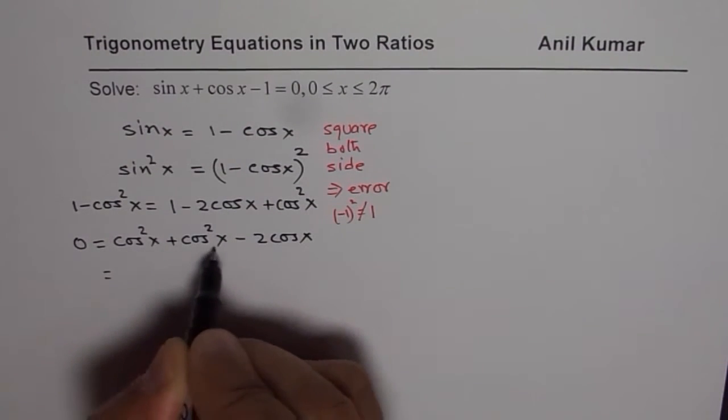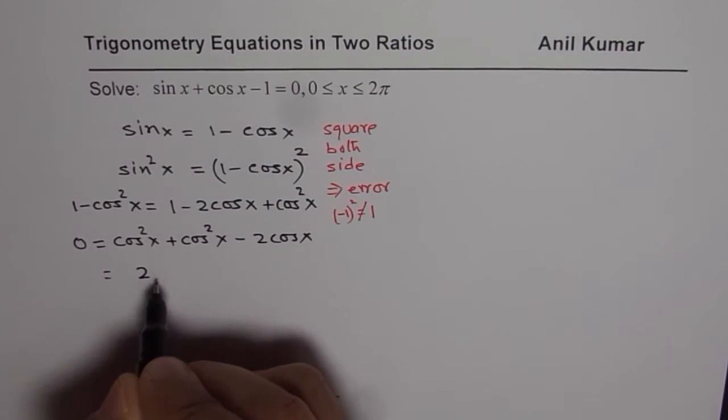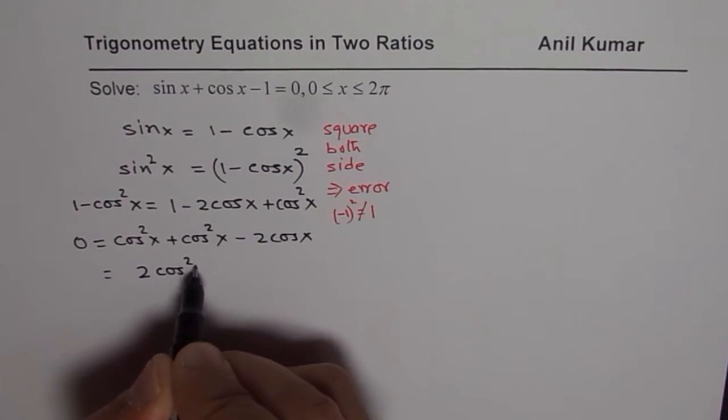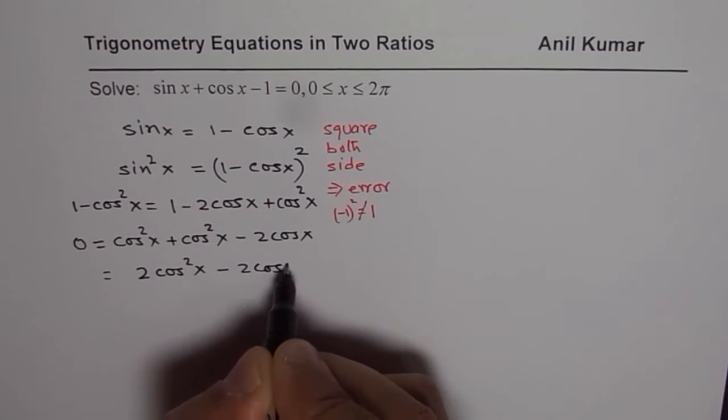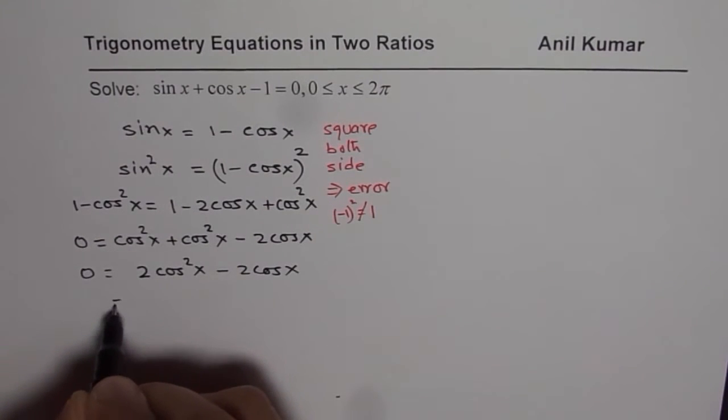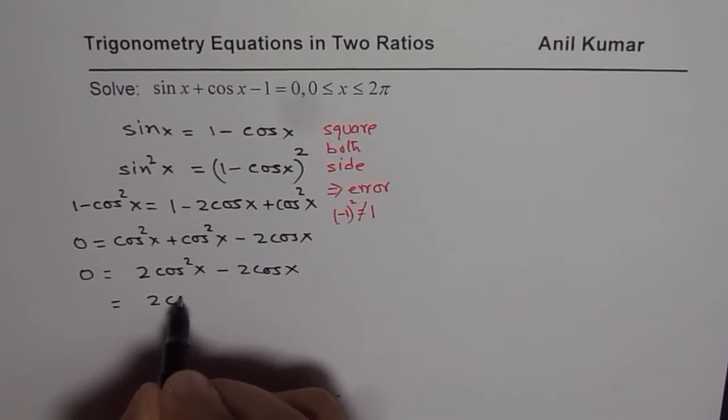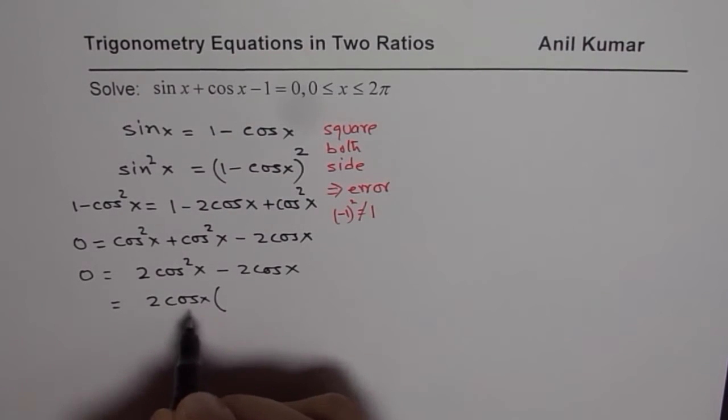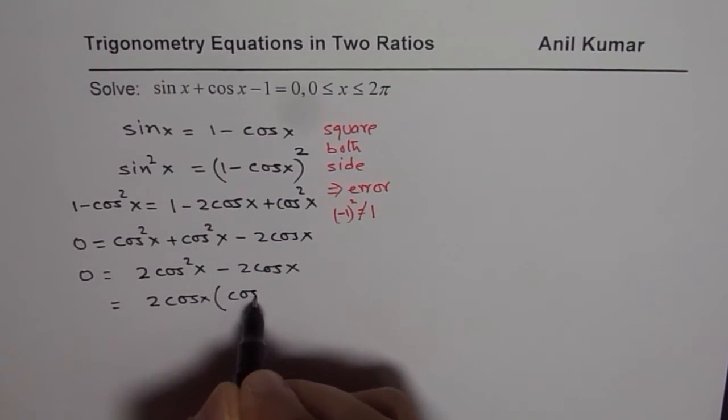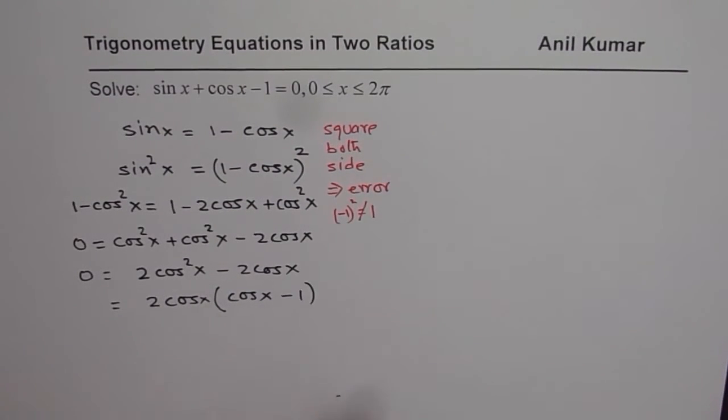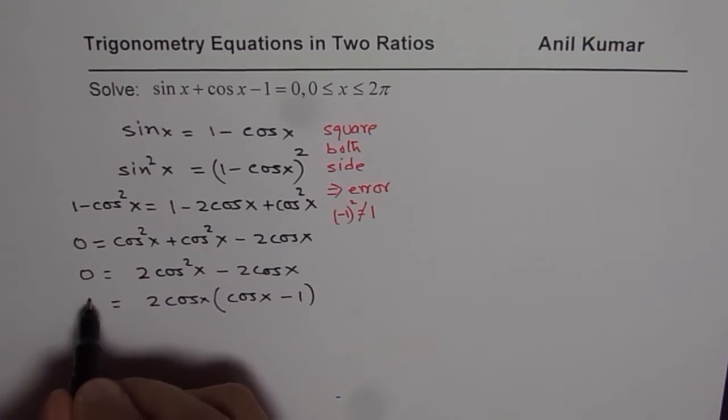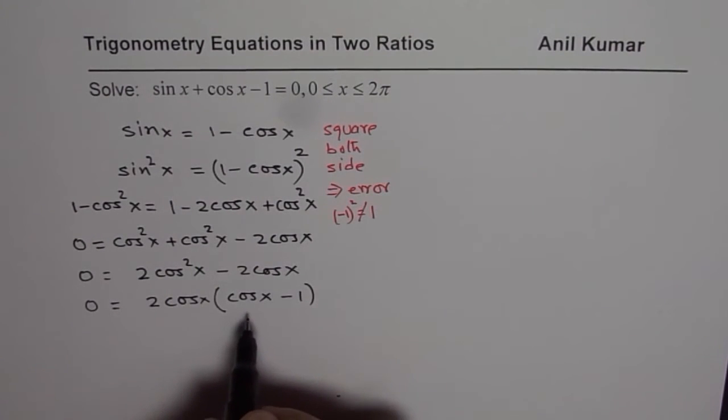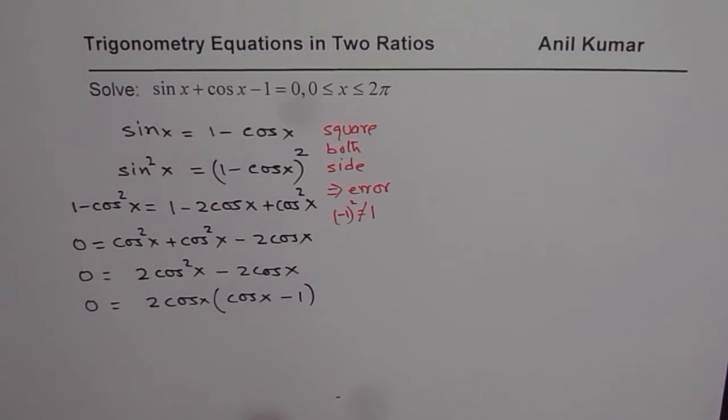Now this is 2 cos square x. Let me first write 2 cos square x minus 2 cos x equals to 0. So we will factor 2 cos x and we will get cos x minus 1. So that means we have 2 factors and either one of them could be 0 to provide us with the solutions.